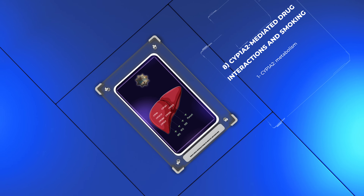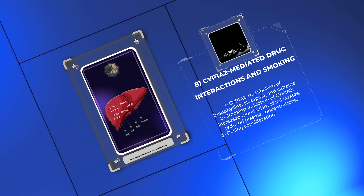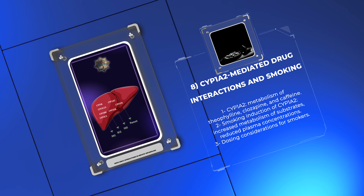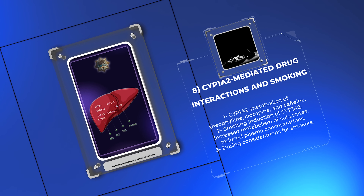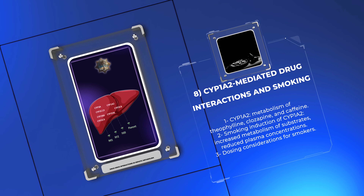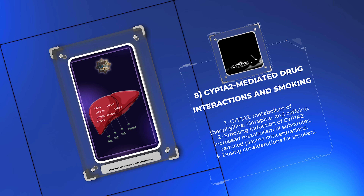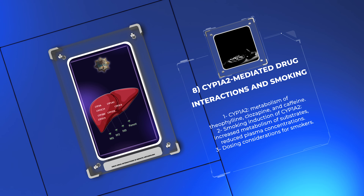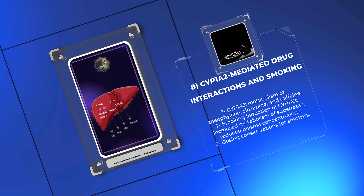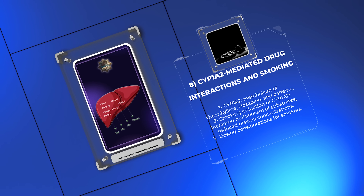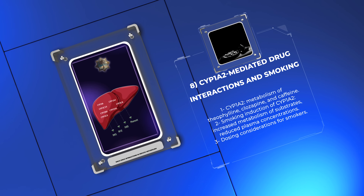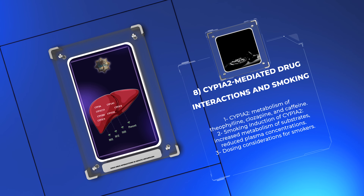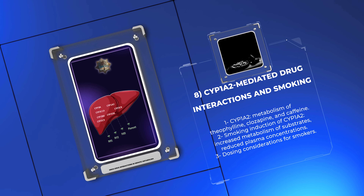CYP1A2 is responsible for the metabolism of various drugs, including theophylline, clozapine, and caffeine. Smoking, through the induction of CYP1A2, can significantly increase the metabolism of CYP1A2 substrates, leading to reduced plasma concentrations and potential therapeutic failure. Therefore, individuals who smoke require higher doses of drugs metabolized by CYP1A2 to achieve the desired therapeutic effects. Understanding the impact of smoking on drug metabolism is crucial for optimal dosing and efficacy.